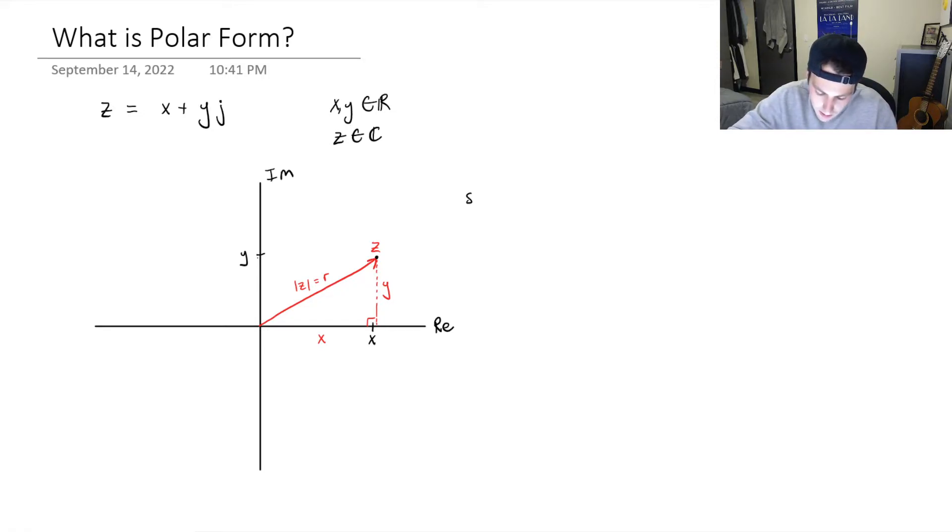So using basic trigonometry, we can find that sin of theta is equal to opposite over hypotenuse, or y over r, which can then give us y is equal to r times sin of theta. We have cos of theta is equal to x over r, because that is adjacent over hypotenuse. So isolating, we get x is equal to r times cos of theta.